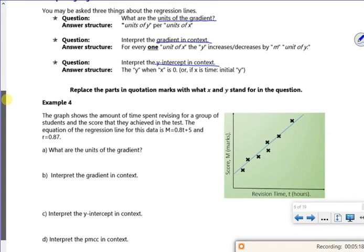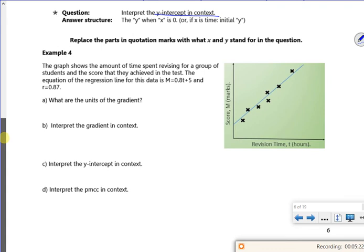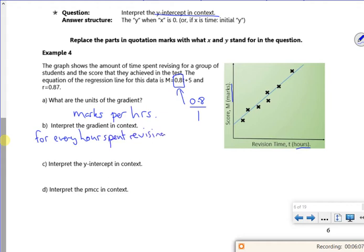So what are the units of the gradient? If you look up there, for the gradient the units are whatever the units of y per whatever the units of x. So the units of y are marks per the units of x, which is hours. Interpret the gradient in context. So now we've got our gradient is 0.8. So for every one hour of revision time, our score should go up by 0.8. For every hour spent revising, our score should increase by 0.8.